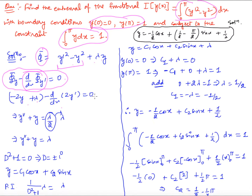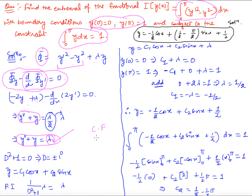This is a second-order linear ODE with a right-hand side, so the solution has a complementary function plus a particular integral. The auxiliary equation for the CF is D² + 1 = 0, giving D = ±i. So the complementary function is y_CF = c1·cos(x) + c2·sin(x).